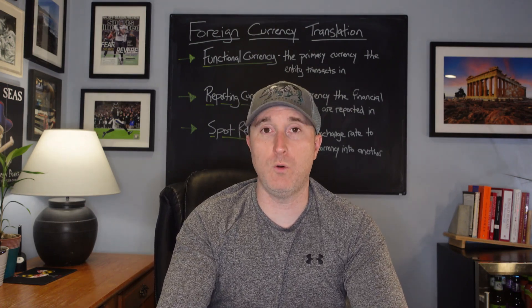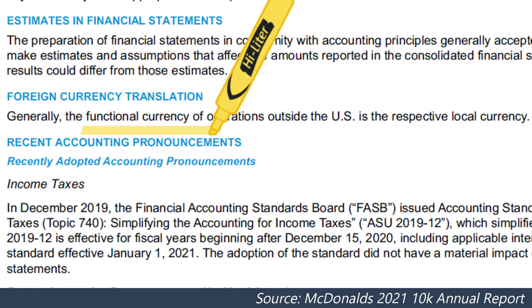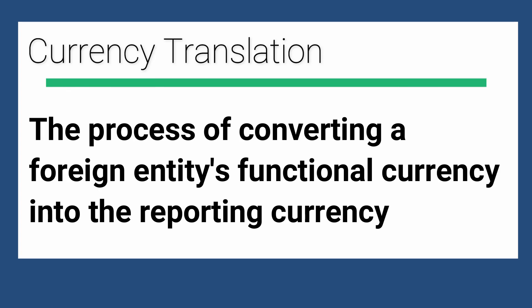Once you determine what the functional currency of the entity is, the next thing you want to look at is what is the reporting currency. You can look at it from two angles: does the entity just need to be translated into the reporting currency, or is it a consolidation effort where you have a foreign subsidiary being rolled up into a parent or holding company? Regardless, converting the functional currency to the reporting currency is called currency translation.